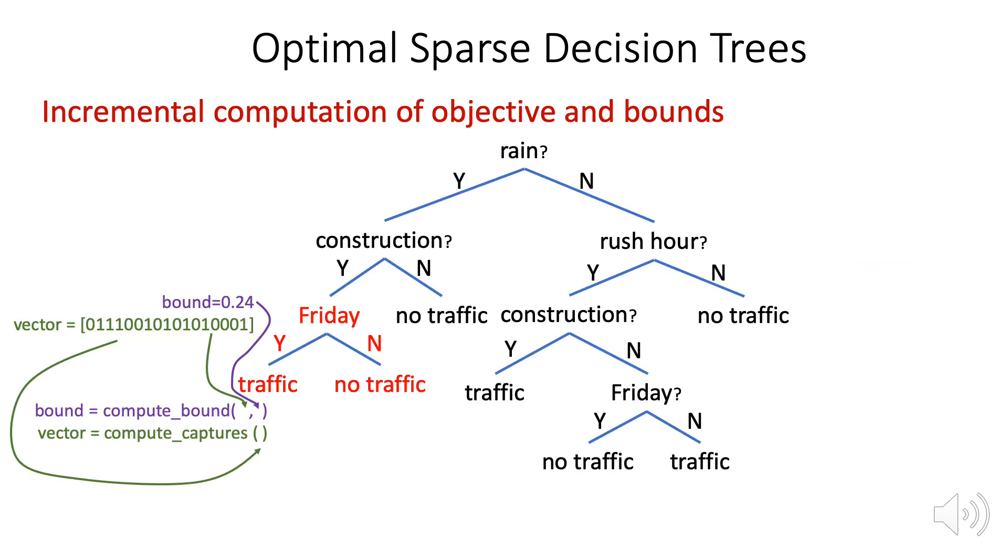And the bounds and bit vectors in each leaf also let us use incremental computation to evaluate the children of the leaf, should we decide to split it.